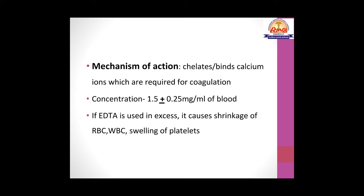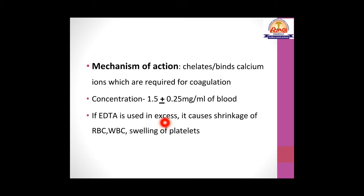The mechanism of EDTA is that it chelates calcium ions present in the blood that are required for coagulation, thereby acting as an anticoagulant. The concentration of EDTA in vacutainers is 1.5 ± 0.25 mg per mL of blood. If EDTA is used in excess — i.e., if blood is not collected up to the mark — excess EDTA can cause shrinkage of RBCs and WBCs and swelling of platelets, leading to false counts.